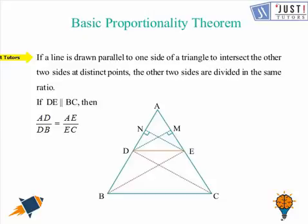So what does this theorem say? It says that if a line is drawn parallel to one side of a triangle to intersect the other two sides at distinct points, the other two sides are divided in the same ratio. What it means is that if DE is parallel to BC, then AD over DB is equal to AE over EC.